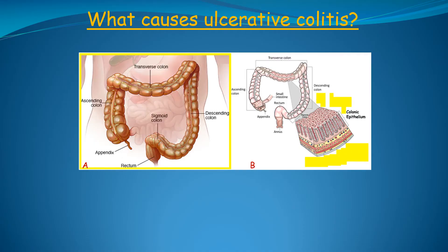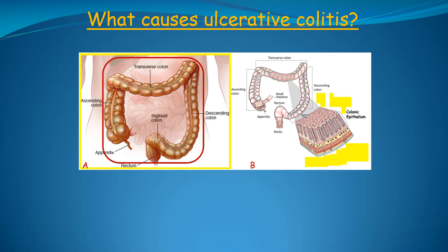Understanding the cause of ulcerative colitis is very simple. The data indicate that ulcerative colitis is caused by hydrogen peroxide that leaks out of the epithelial cells that line the inner surface of the colon. On the left side of the diagram in section A, it shows the entire colon inside the abdominal cavity highlighted by the red square. In panel B to the right, we have magnified a small piece of the cells lining the inner surface of the colon. The colonic epithelium are the cells highlighted by the red square — these are the cells that produce the excess hydrogen peroxide which the data indicate causes ulcerative colitis.